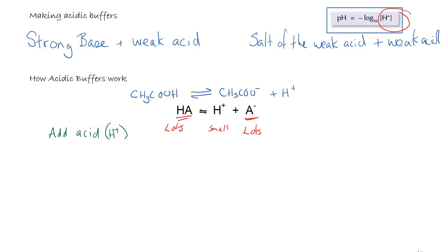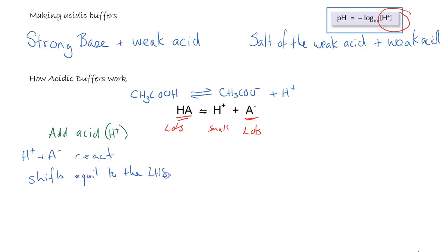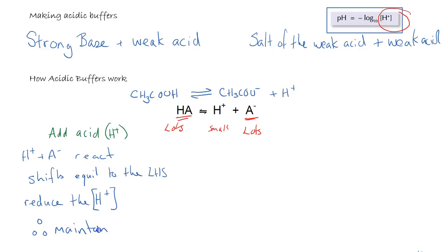If we add a small amount of H⁺ — the acid — to the buffer, the H⁺ and A⁻ react, which shifts the equilibrium to the left-hand side. The result is that we reduce the H⁺ concentration from what was added, and therefore we maintain the hydrogen ion concentration and therefore maintain the pH to an approximately constant value. So we have to have lots of A⁻.